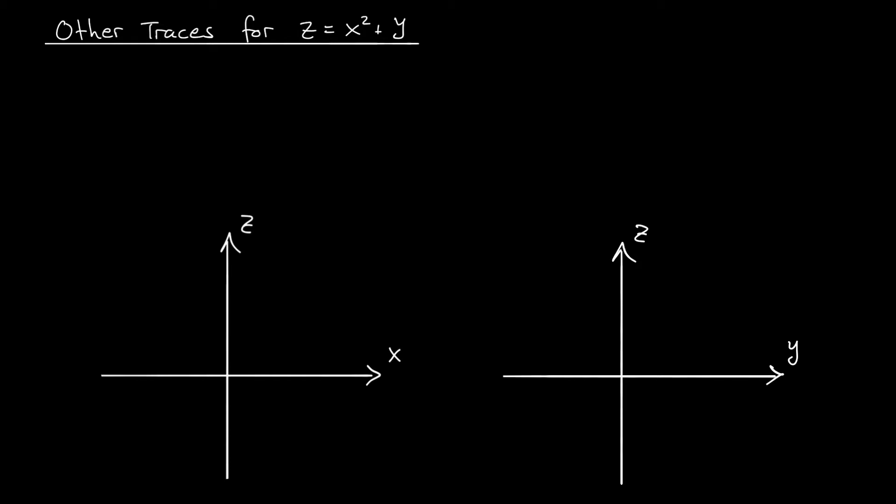First, I'm going to look at the trace by setting y equals to k. If I set y equals k, my equation is z is x squared plus k. I bet you're getting tired of seeing parabolas, right? But sure enough, we have a parabola in the xz plane. z is x squared plus a constant.